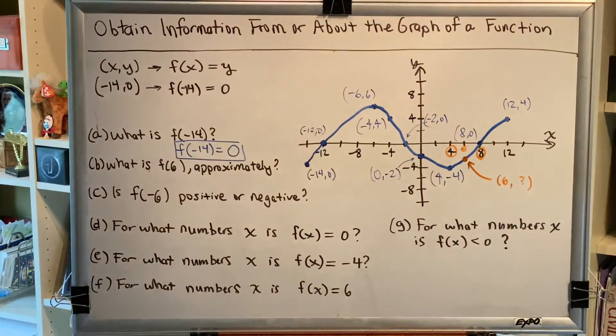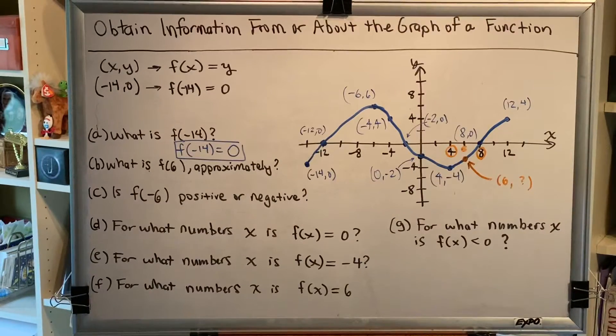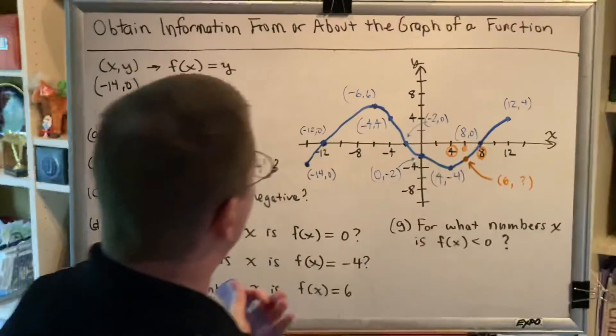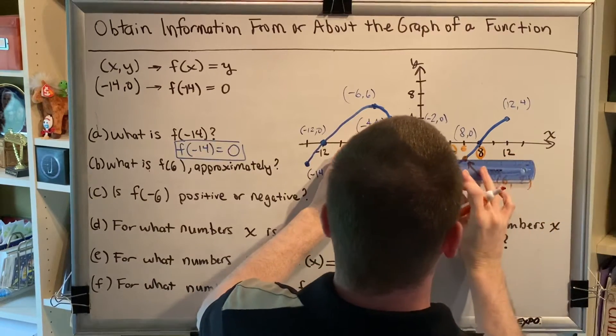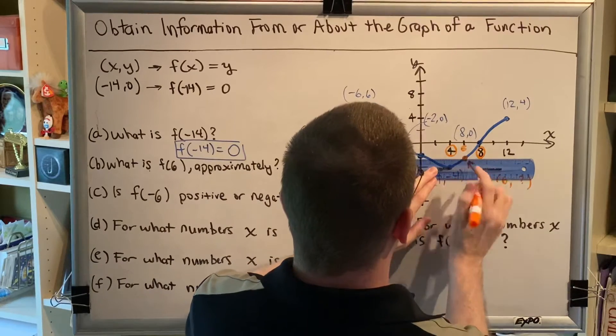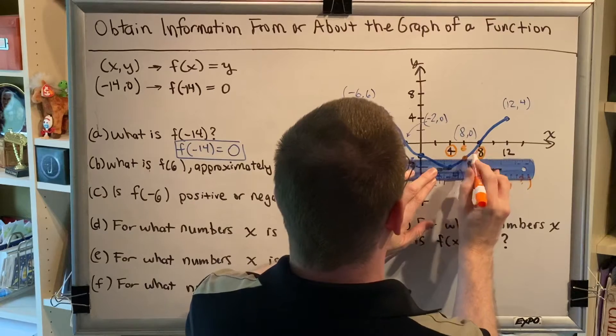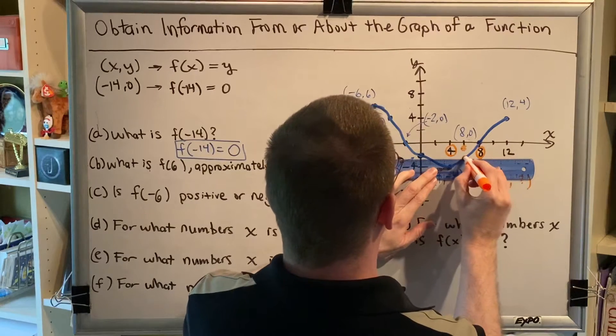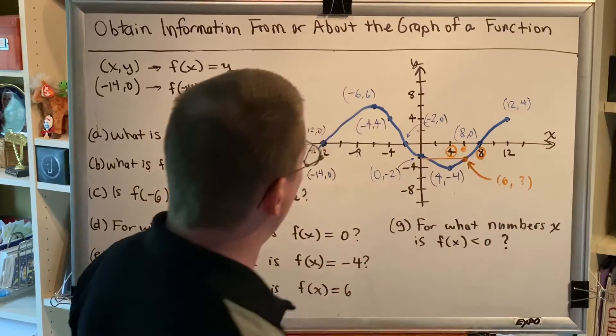Now you might look at that and think it's negative 2. Well, look more carefully. We're going to use a straight edge here and we're going to draw a horizontal line from this point over to the y-axis with the hope that we're going to be able to see exactly what the y coordinate is of this point.